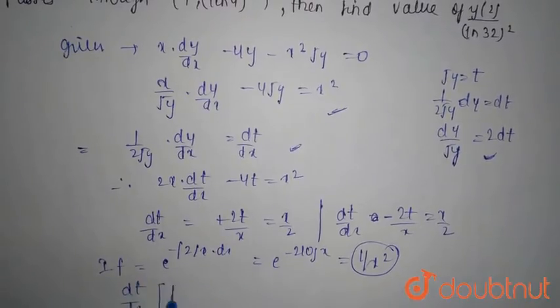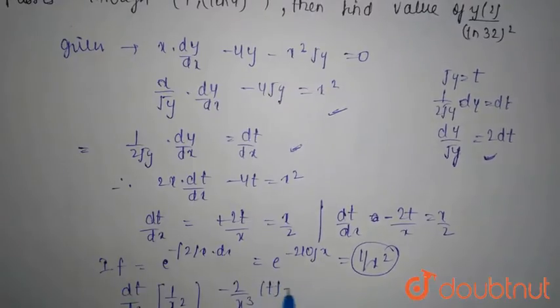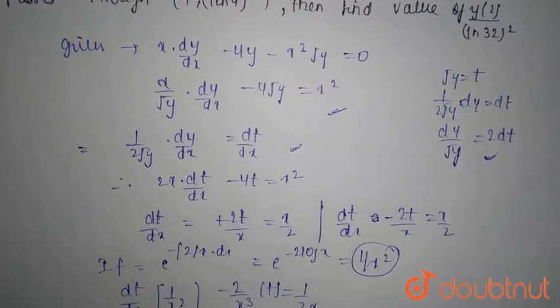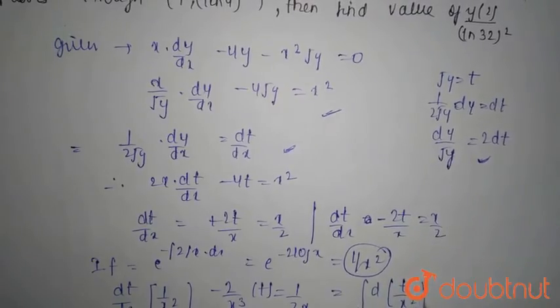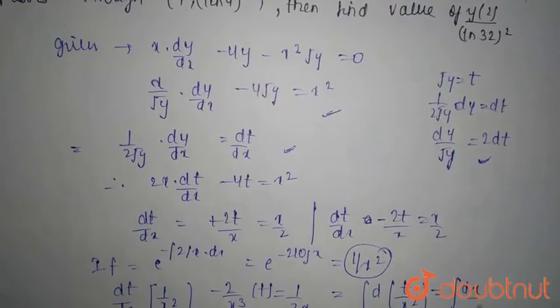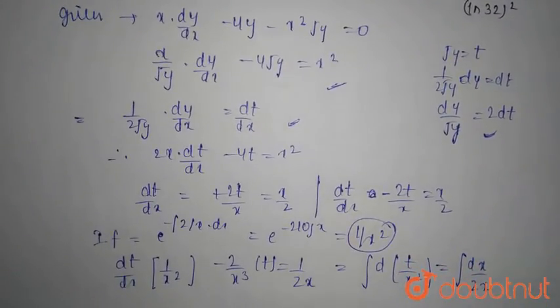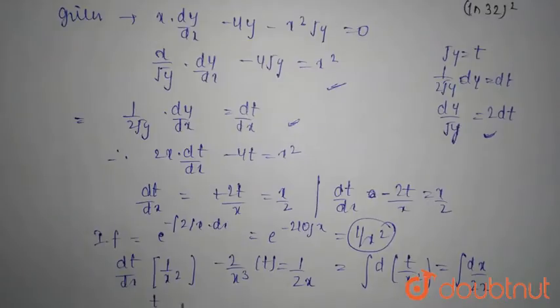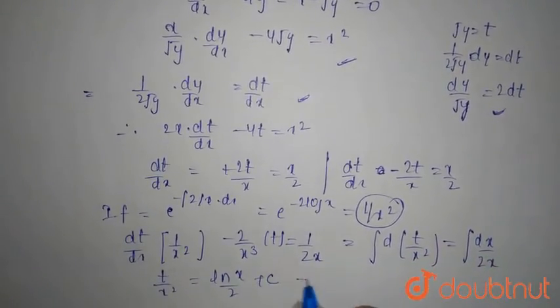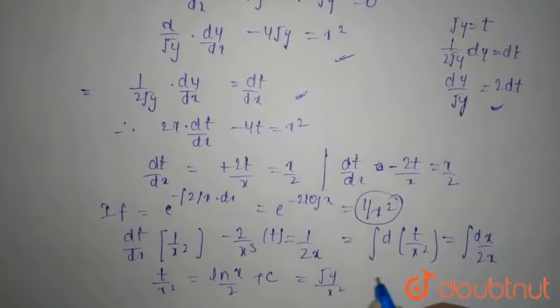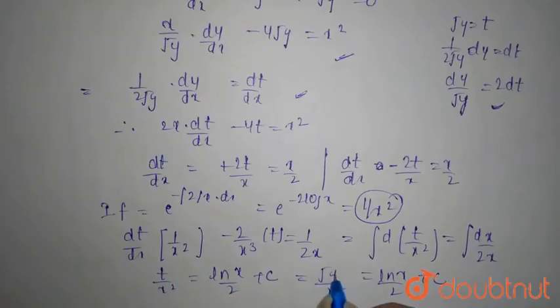d/dx of (t/x²) minus 2/(x³) t equals 1/(2x) which equals d(t/x²) equals dx/(2x). So t/x² equals ln x/2 plus c, which equals root y/x², and this is ln x/2 plus c because t is root y.